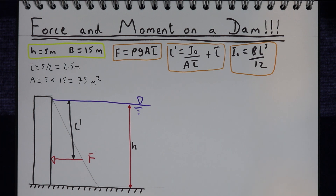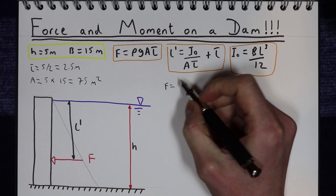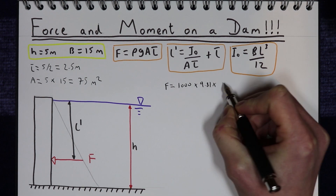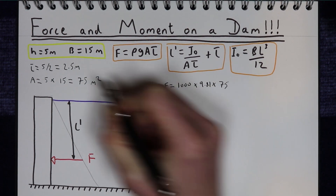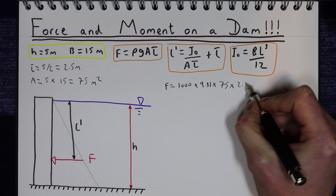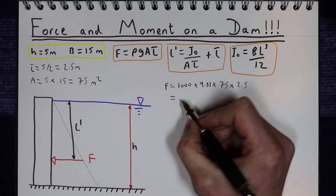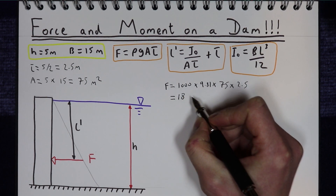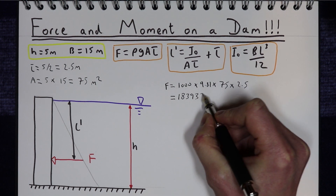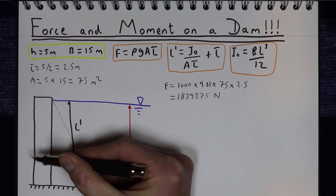The total force acting on the surface is the density of water times gravity times the area of 75 metres squared times the centroid of 2.5 metres. That gives a total force acting on the dam of 1,839,375 newtons. So that is the total force F pushing on the dam.